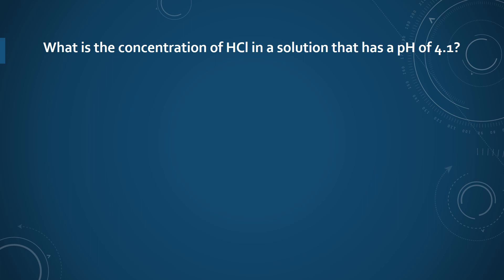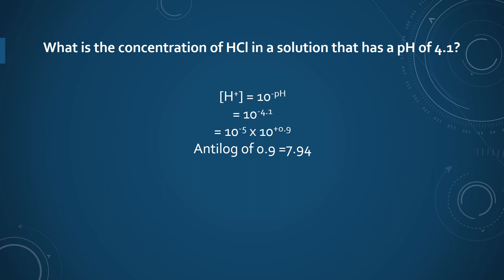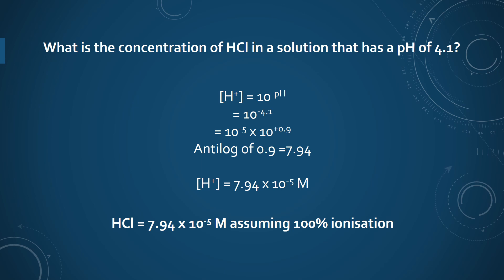From the pH we can also calculate the concentration based on the hydrogen ion concentration. For example, what is the concentration of HCl in a solution that has a pH of 4.1? Since pH equals the negative logarithm of hydrogen ion concentration, the hydrogen ion concentration equals 10 to the power minus 4.1, which can be written as 10⁻⁵ × 10⁰·⁹. The antilog of 0.9 equals 7.94, so the hydrogen ion concentration is 7.94 × 10⁻⁵ molar, which is the concentration of HCl assuming it is 100% ionized.